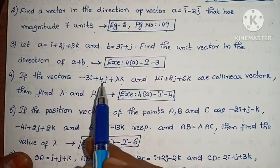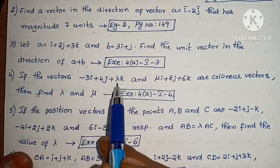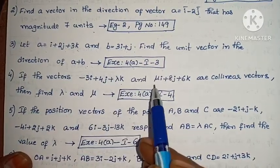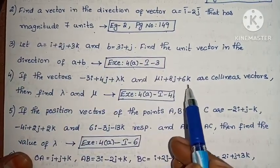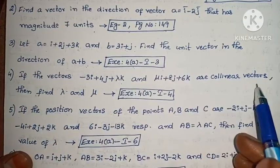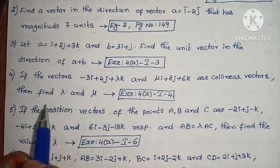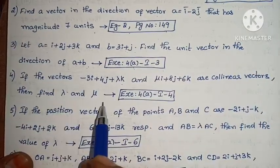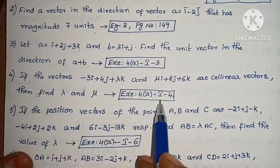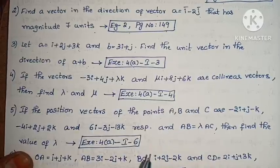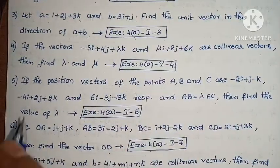Next: If the vectors minus 3i + 4j + λk and μi + 8j + 6k are collinear vectors, then find λ and μ. Exercise 4A, problem 4.